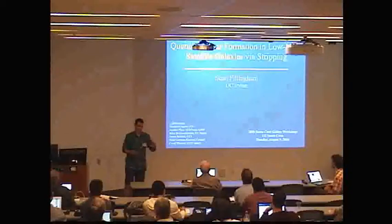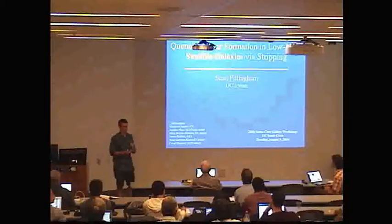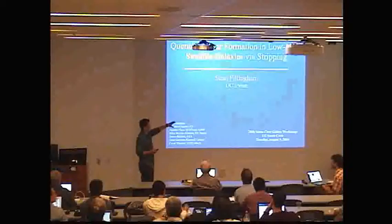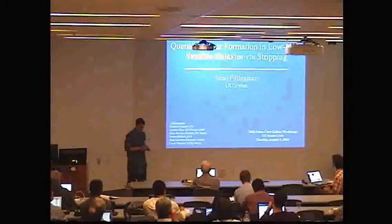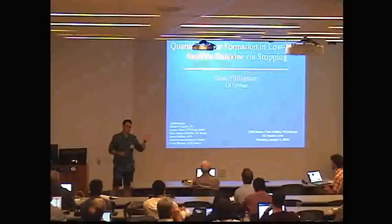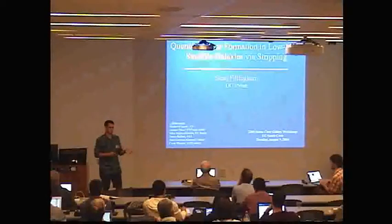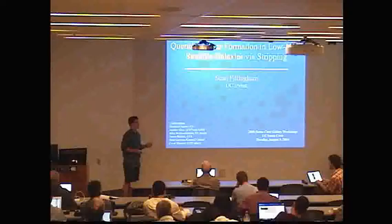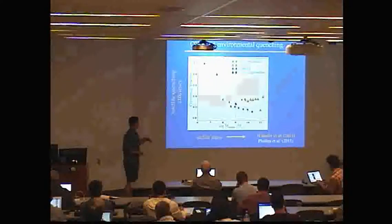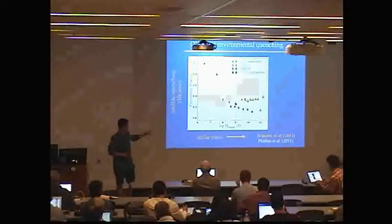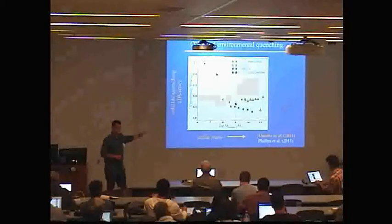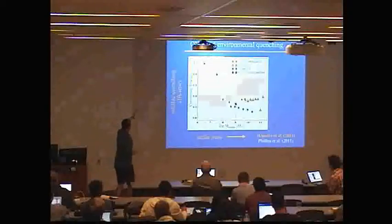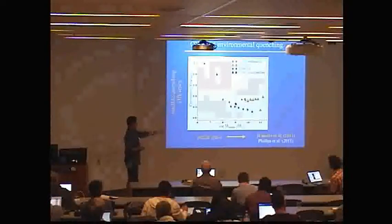I'm going to be transitioning slightly to low-mass satellite galaxy quenching, specifically via stripping. When I say low mass, I mean very low mass — like 10 to the 6 to 10 to the 8 in stellar mass. These are dwarf galaxies that we can really only observe in any complete sense in the local universe. To introduce this, I'm going to show you this figure showing the satellite quenching efficiency as a function of stellar mass.